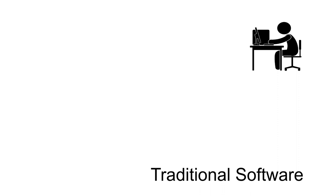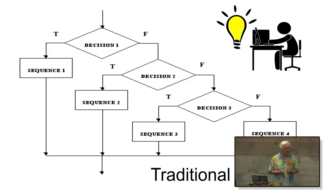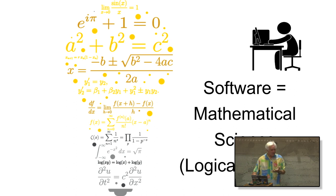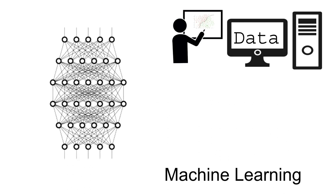Let's look at the difference between traditional software and machine learning software. In traditional software, engineers sit at their desk, get an idea, and manually code all the decision points — describing to the computer what to do at every possible step. The difficulty is there are many paths and you have to make sure every one works. That makes traditional software like a mathematical science where we're basically trying to prove programs correct. We use boolean logic and strive for certainty.